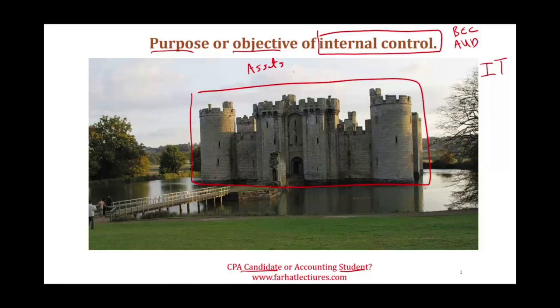Inside this fort sits something very important: our accounting information system. That's the system that generates our financial statements — income statement, balance sheet, statement of cash flows, stockholders' equity. This accounting information system also generates internal reports that help us run the company. So inside this fort is a very important component: the accounting information system.